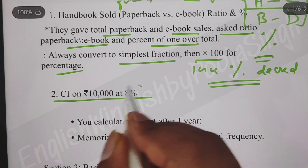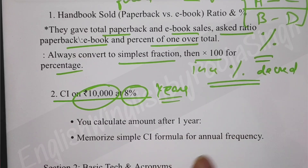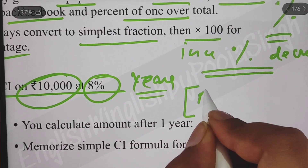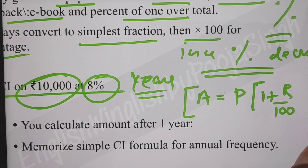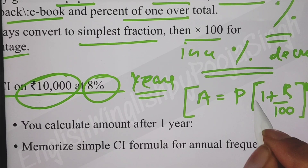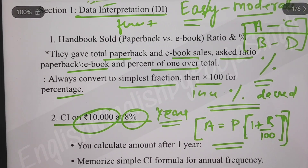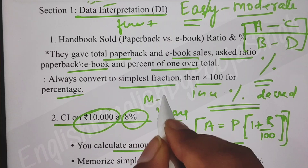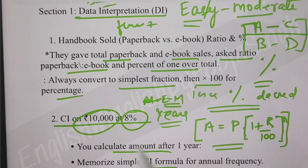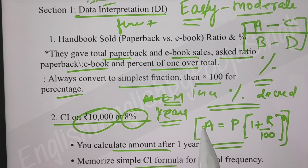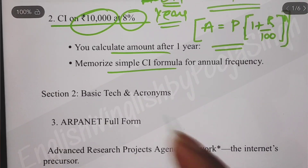Next is CI (Compound Interest). A percentage was given, some amount was given, and a year was given. You just had to apply the basic formula: A = P(1 + r/100)^n, where A is amount, P is principal, r is rate of interest, and n is the year. It was completely formula-based. Those knowing the formula could do it; those who didn't, couldn't. I'd consider it moderate to difficult.